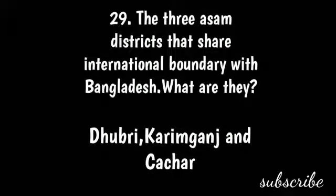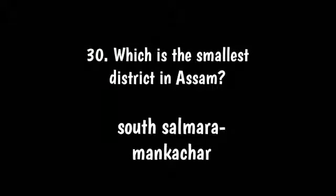Question 29: Which three Assam districts share an international boundary with Bangladesh? Answer: Dhubri, Karimganj, and Cachar. Question 30: Which is the smallest district in Assam? Answer: South Salmara-Mankachar.